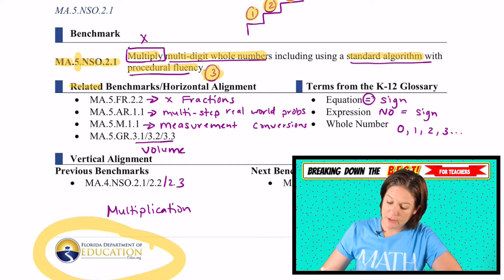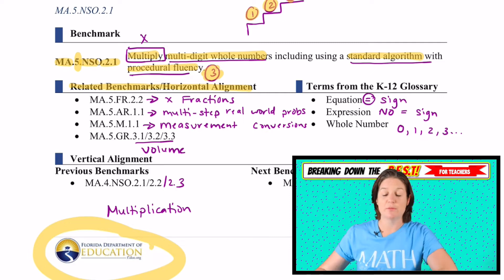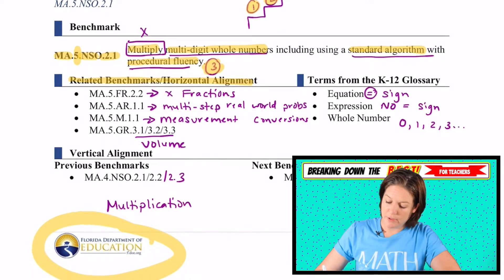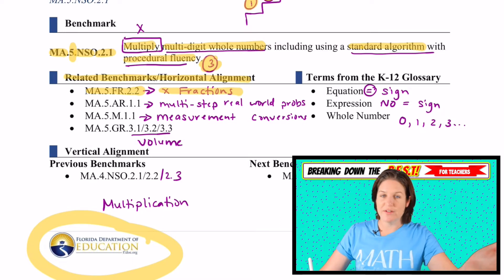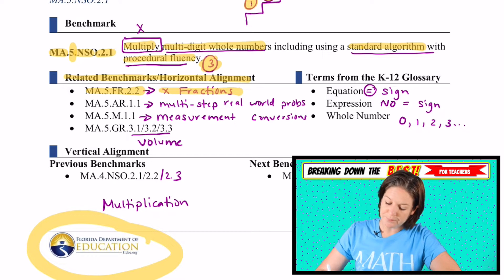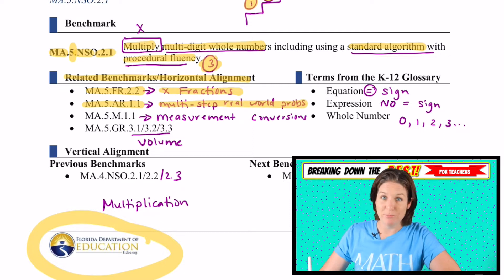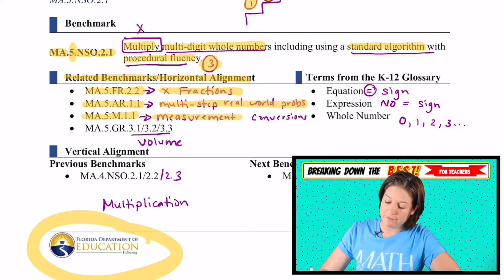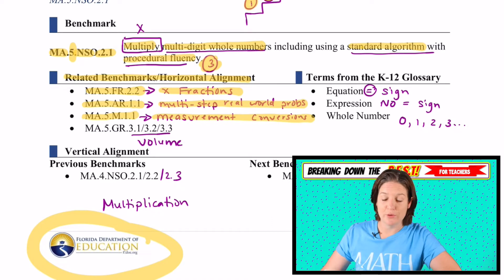Next are some related benchmarks, or the horizontal alignment — basically other benchmarks in fifth grade that align with the benchmark we're discussing today. The state of Florida has said that MA.5.FR.2.2, which is multiplying fractions, makes sense because we'll be multiplying whole numbers and then translating that into multiplying fractions. MA.5.AR.1.1 is multi-step real-world problems where we multiply multi-digit whole numbers. MA.5.M.1.1 is measurement conversions, and we do a whole lot of multiplying and dividing when performing those measurement conversions.